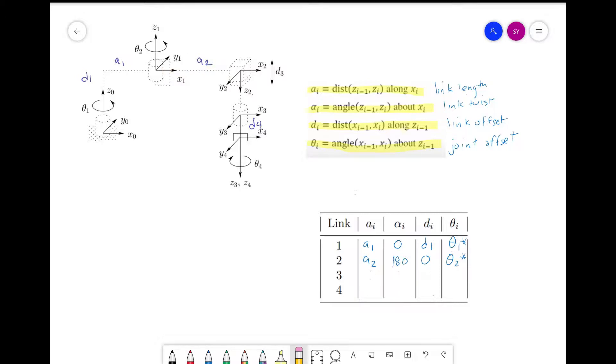Next, let's look at link three. For link three, the distance from z_2 to z_3 is zero. So a_i is zero. For alpha, we see that the z-axis does not change orientation. So alpha is zero.